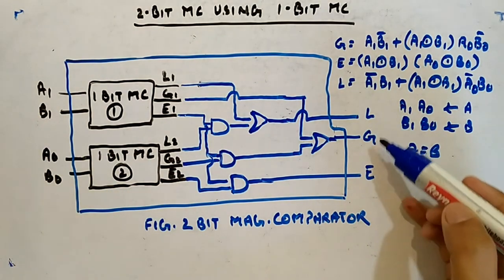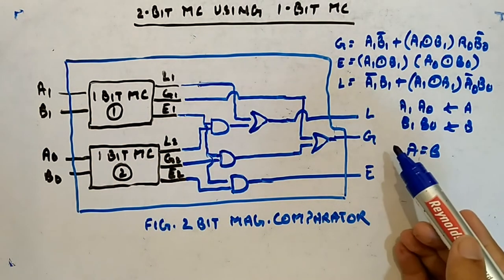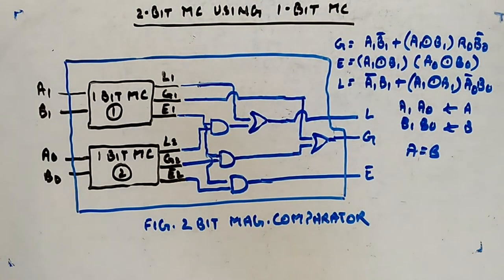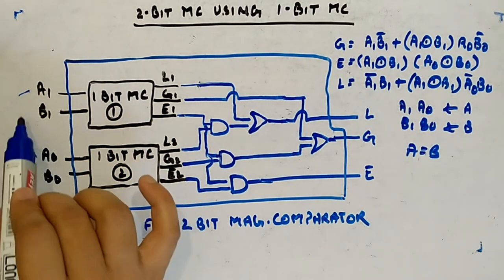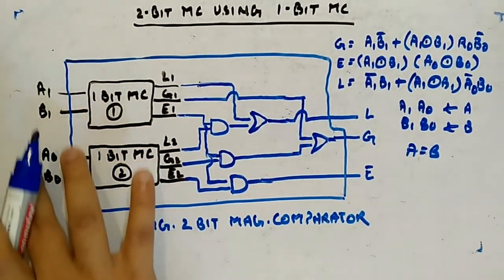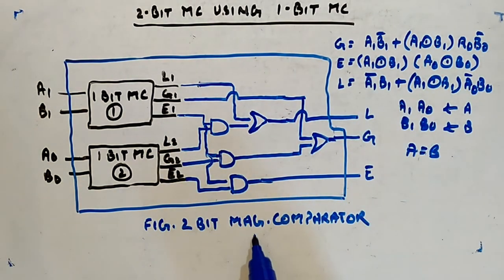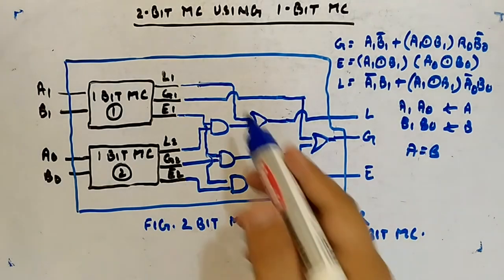This whole thing is the two-bit magnitude comparator where you are giving A1, B1, A0, B0 as inputs and getting less, greater, and equal as outputs — whether A is greater than B, A is less than B, or A is equal to B. This is a two-bit magnitude comparator using two one-bit magnitude comparators.